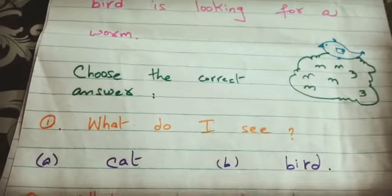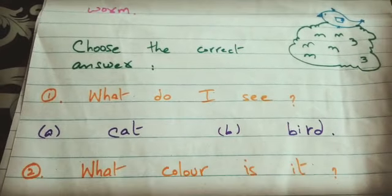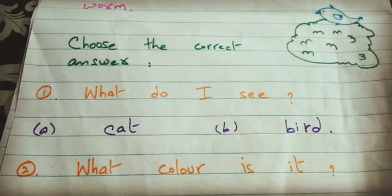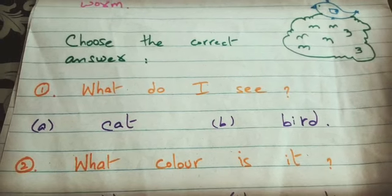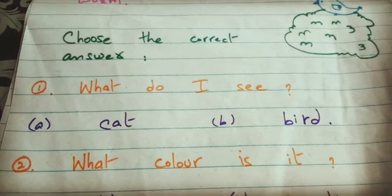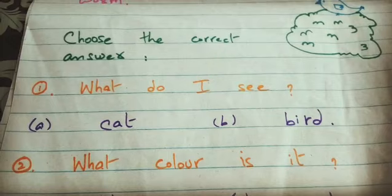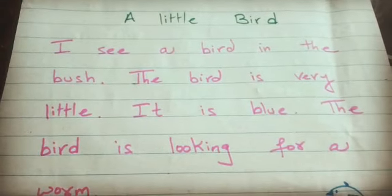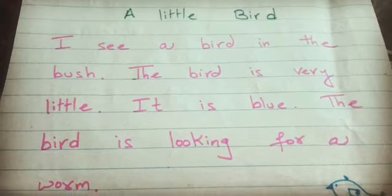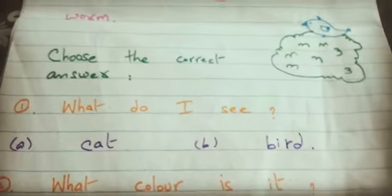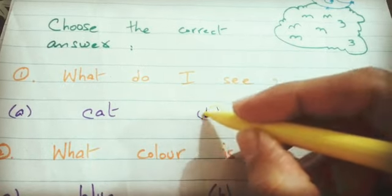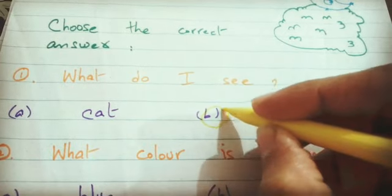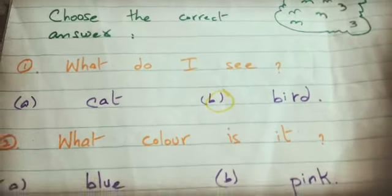Now, choose the correct answer. Question number 1: What do I see? Option A: Cat. Option B: Bird. We again read the paragraph — I see a bird. So, the correct option is Bird. We will mark a circle on option number B.